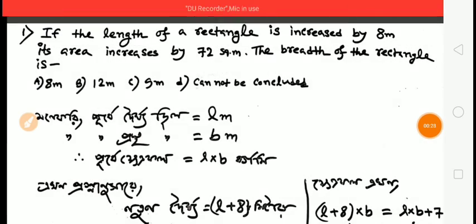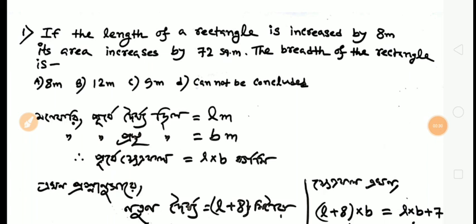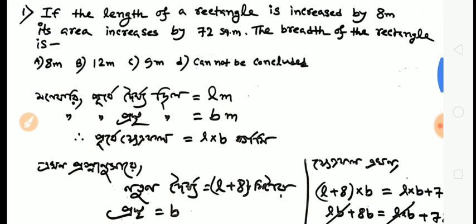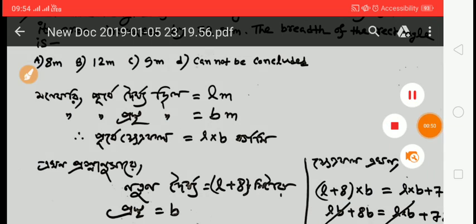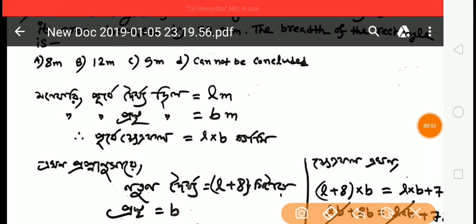The first question: if the length of a rectangle is increased by 8 meters, its area increases by 72 square meters. The breadth of the rectangle is 8 meters, 12 meters, or 9 meters — what is the answer? The rectangle here is L meters.